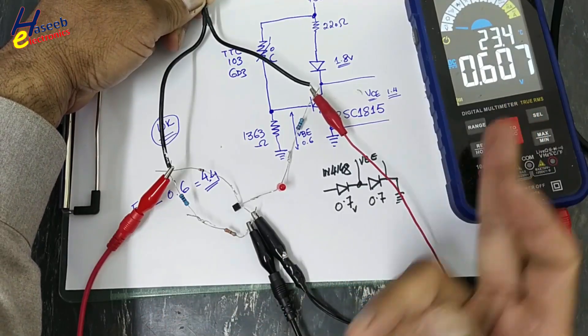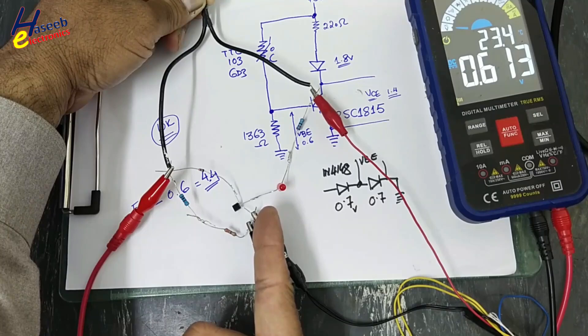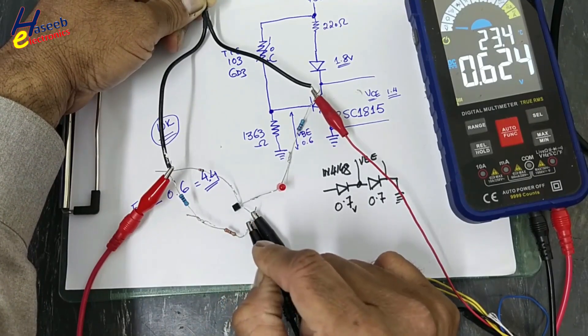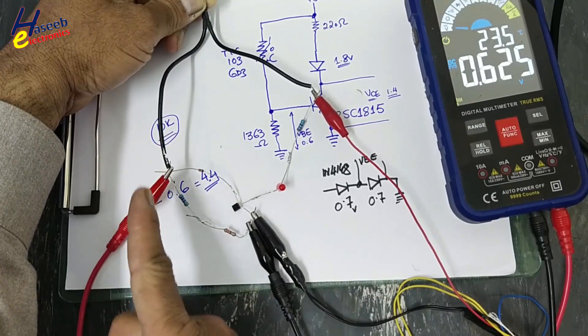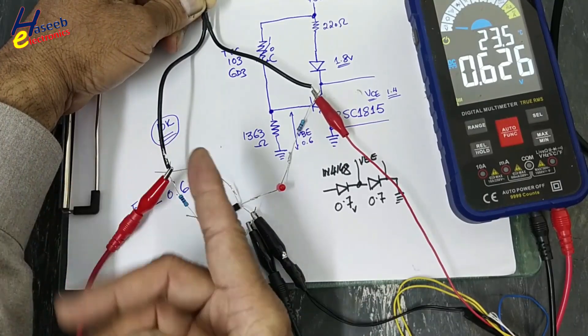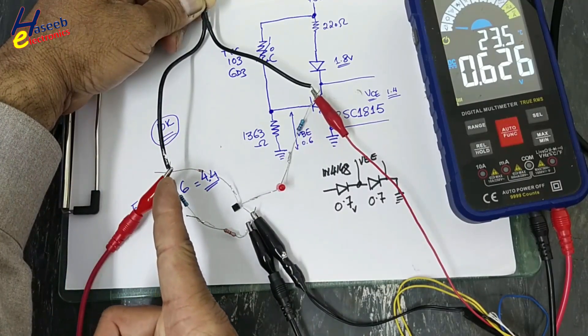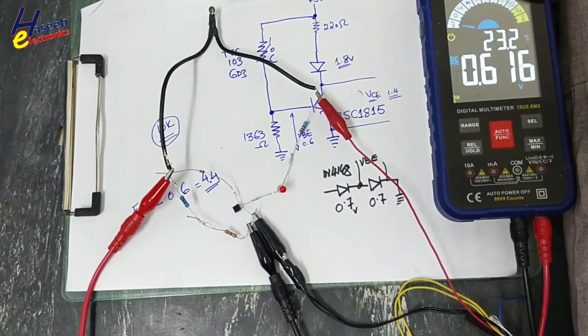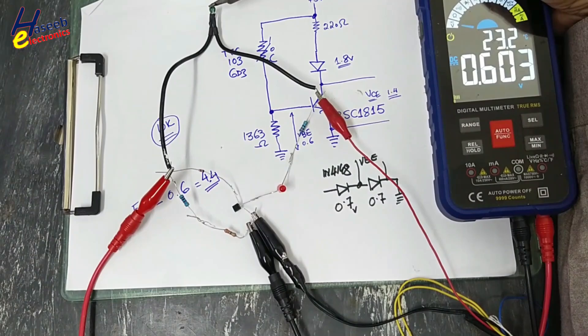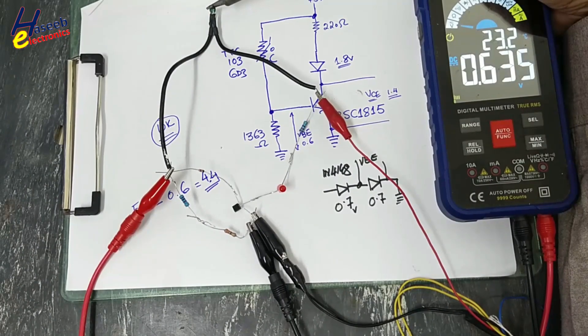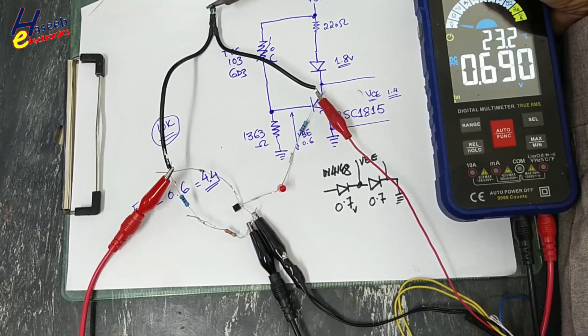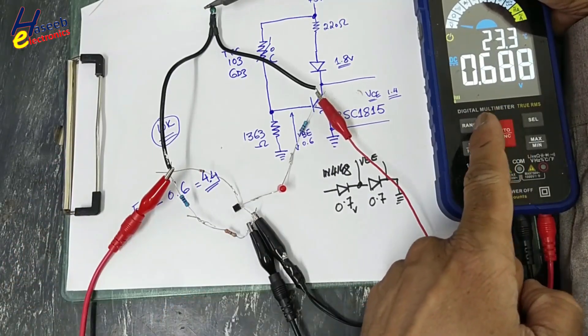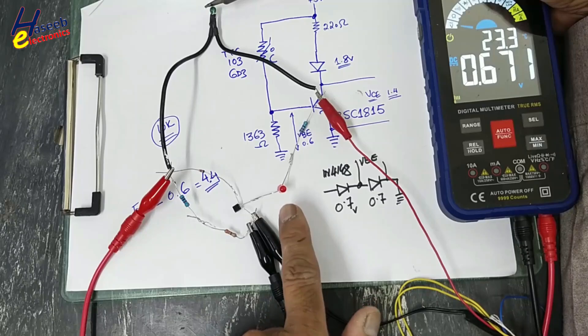At 0.6 volts this LED was turning on, but this time it will not turn on. Now this LED will turn on in that condition when the temperature increases at that level that this point must be 1.3 volts. Let me increase the temperature. If you remember, when 0.7 volts were there, this LED was full bright.